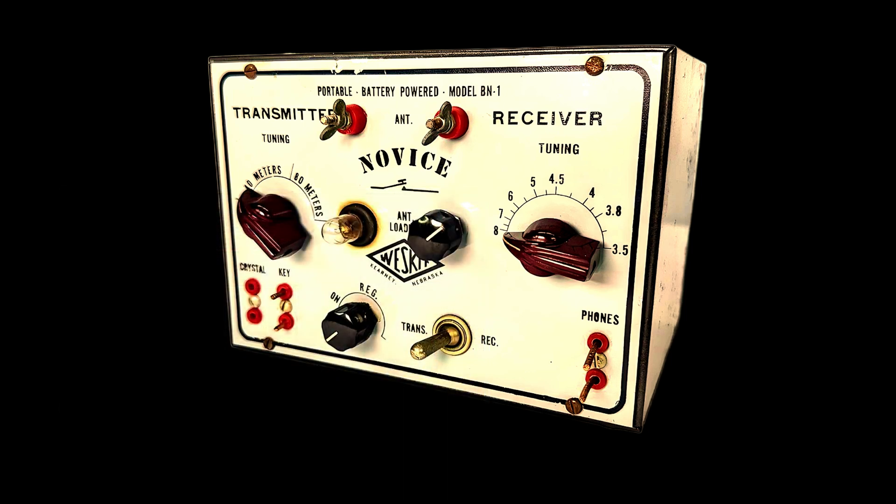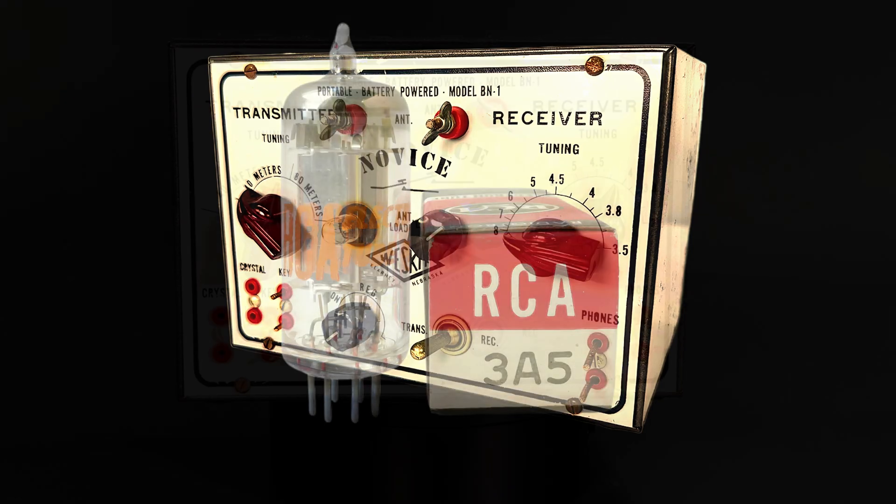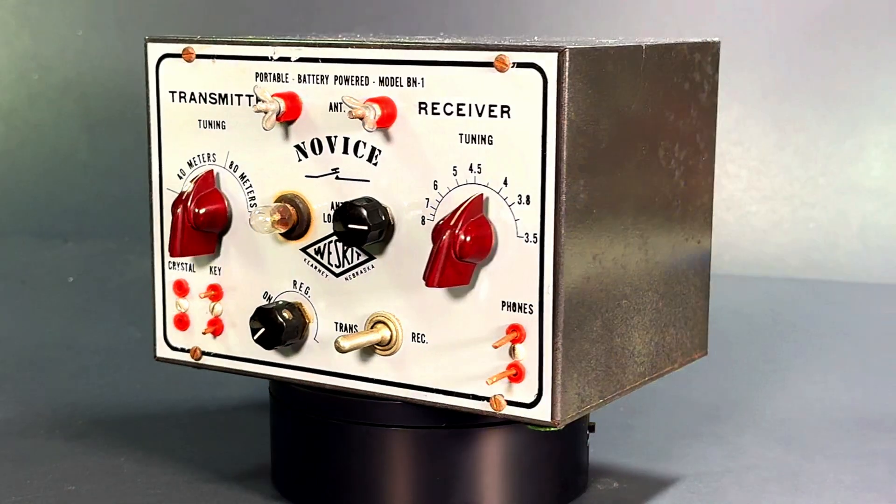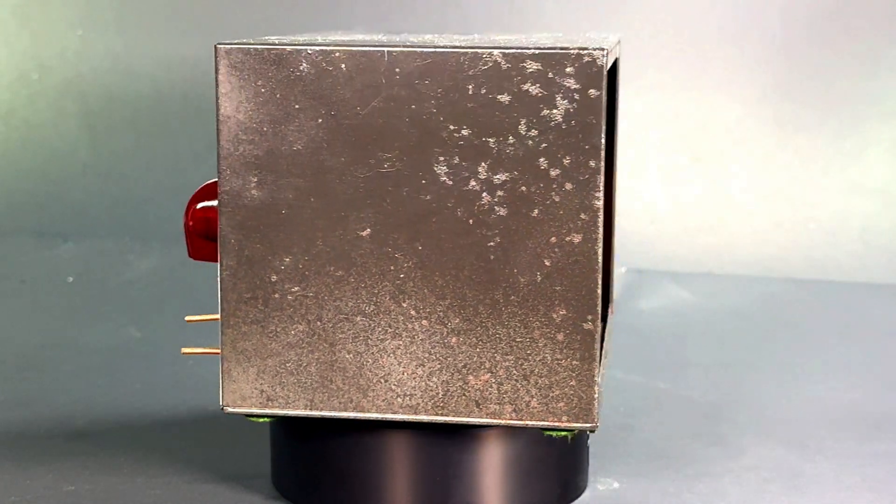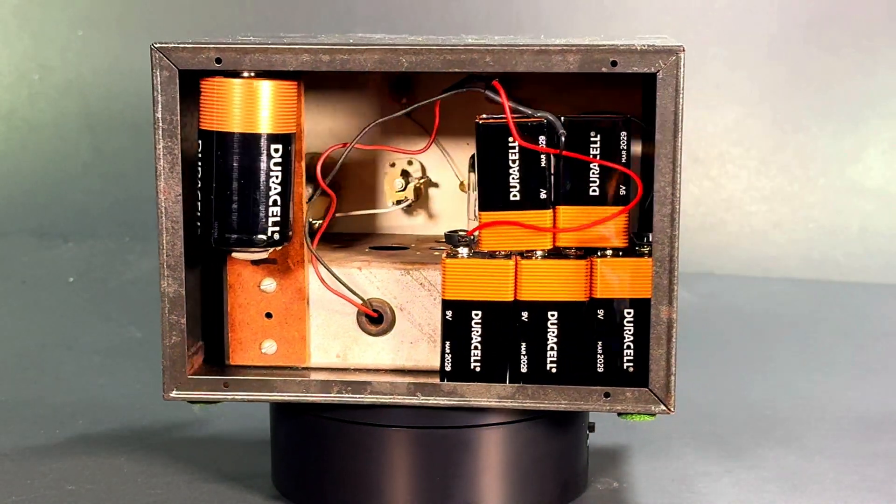It's a very basic 80 and 40 meter transmitter and a regenerative receiver covering from 3.5 to 8 megahertz. Runs on a single 3A5 tube, and it's a cute little bugger. It's in a little, about a six and a half inch wide box, all contained in the same box, and it's battery powered only.